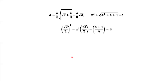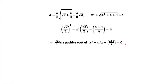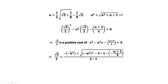From this equation we have the following result: square root of two over two is a positive root of this quadratic equation. Why? Because if we replace x by square root of two over two, we will have this equation satisfied. So square root of two over two equals the expression given by the quadratic formula.